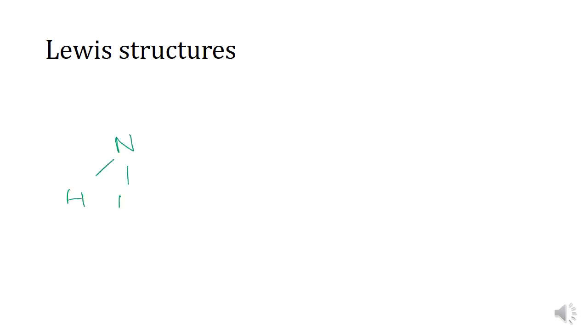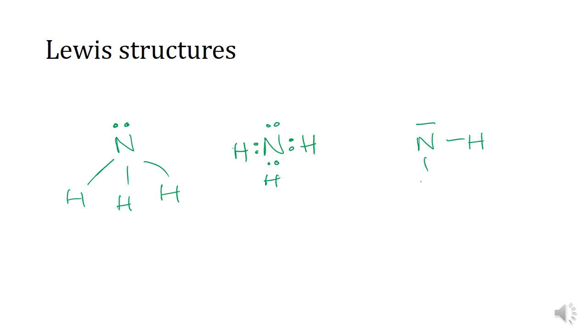Lewis structures are one of the main ways we can represent covalent compounds. Looking at ammonia as an example — make sure that you are representing the lone pair of electrons, as that is the most common mistake people make. You can represent electrons as dots, lines, or X's; it's completely up to you, as long as you are including the lone pair.